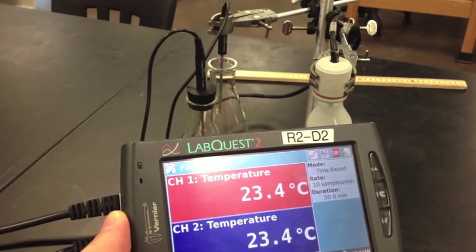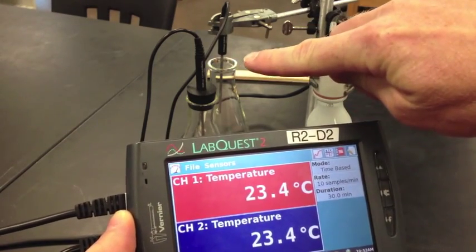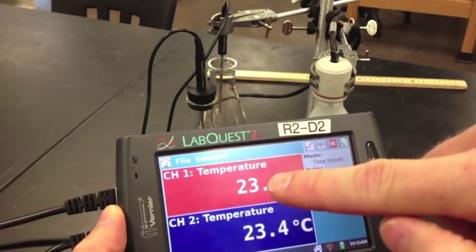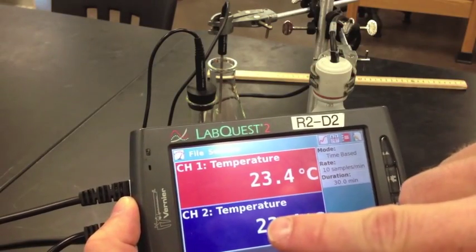What's important to do is make sure that you know which temperature probe is plugged into which channel. So for this experiment, I have the Erlenmeyer flask without the stopper plugged into channel 1, and I have the Erlenmeyer flask with the stopper plugged into channel 2.